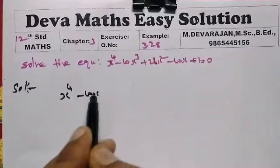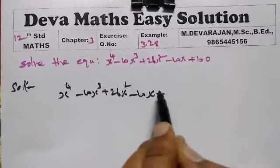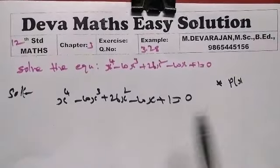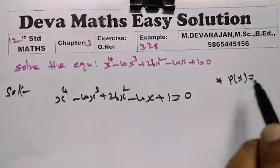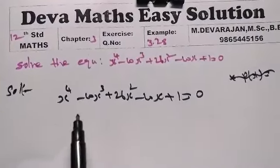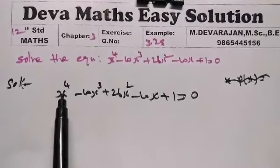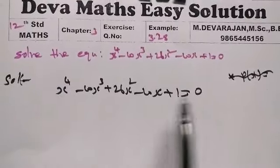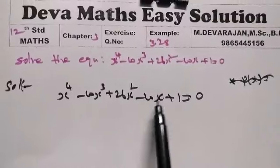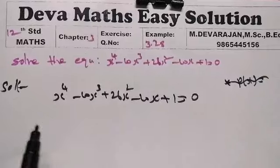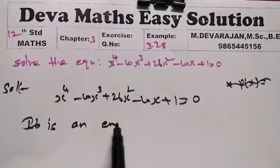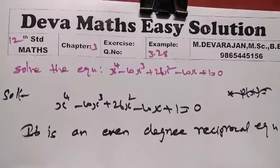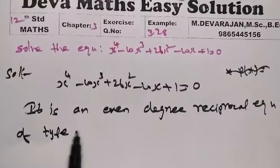Solution: given equation x power 4 minus 10 x cube plus 26 x square minus 10 x plus 1 equal to 0. So this is the format type 1, reciprocal equation of type 1. Q of x equal to m, maximum power equal to 0. The coefficients match: a4 equals 1, a3 equals minus 10. Middle term not equal to 0. So this is the format, it is even degree, reciprocal equation of type 1.